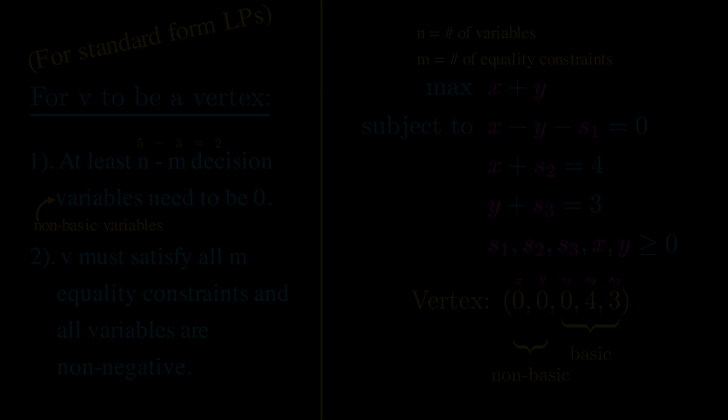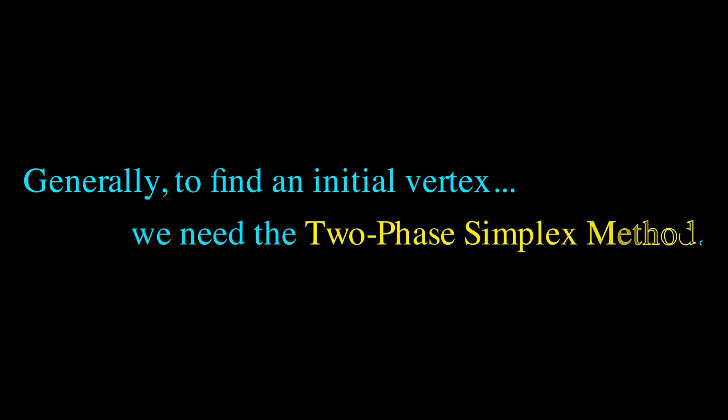In general, finding an initial vertex isn't as easy as what we just did. Sometimes, when we set n minus m variables to be non-basic and solve for the remaining, the solution turns out to be infeasible. So usually, we need to use something called the two-phase simplex method.